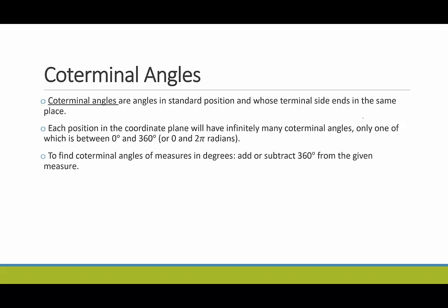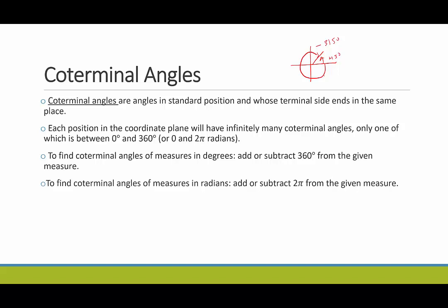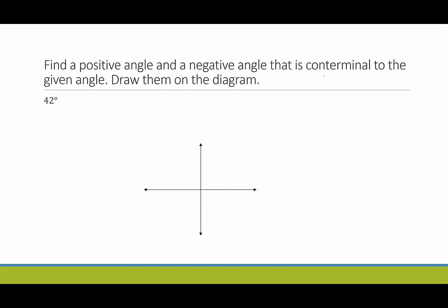To find coterminal angles given in degrees, we can add or subtract 360 from the given measure. That makes sense because 45 degrees and negative 315 degrees differ by 360 degrees — their arcs together form a complete circle, which has a degree measure of 360. If we want to find coterminal angles given in radians, we add or subtract two pi from the given measure.